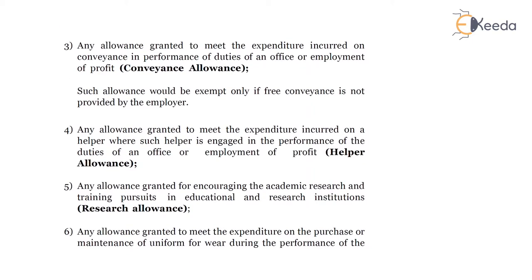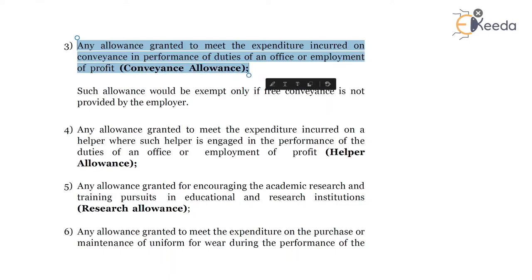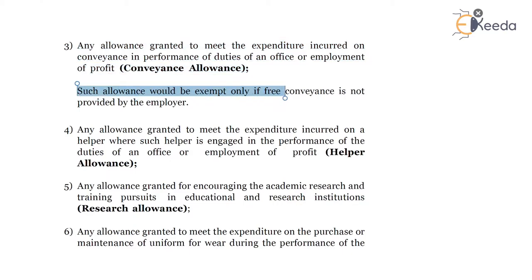The third allowance: any allowance granted to meet the expenditure incurred on conveyance in the performance of duties of an office or employment of profit, termed as conveyance allowance. Such allowance would be exempt only if free conveyance is not provided by the employer. If any conveyance allowance is provided by the employer which is related to expenditure incurred in the performance of duties of an office, then the conveyance allowance will be exempt in the hands of the employee.